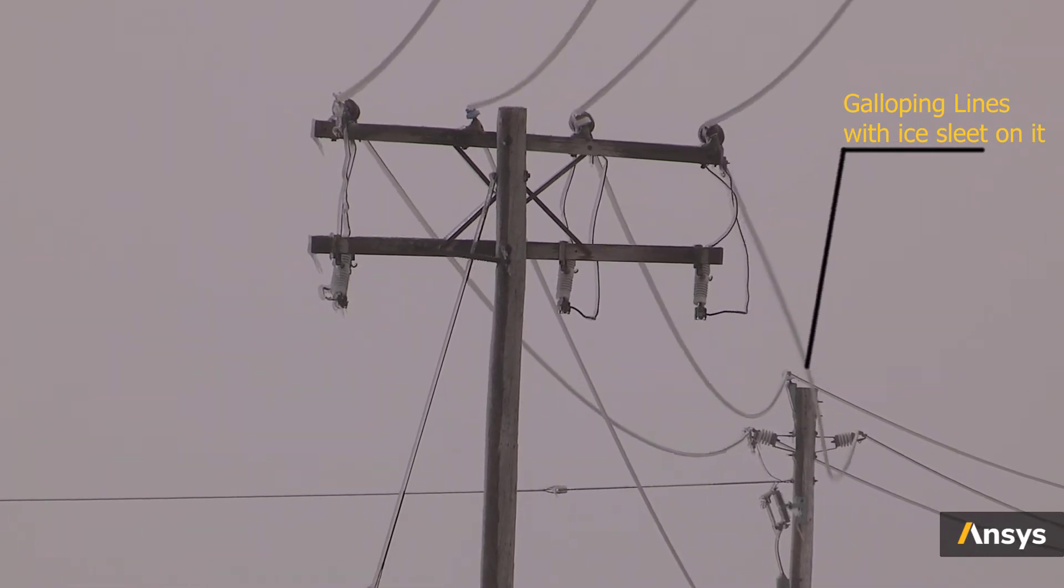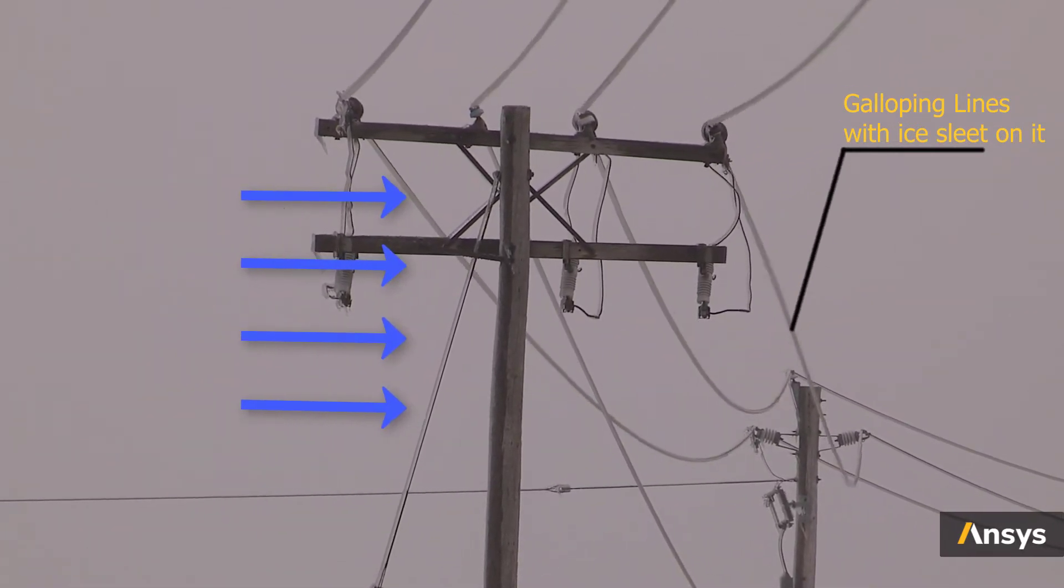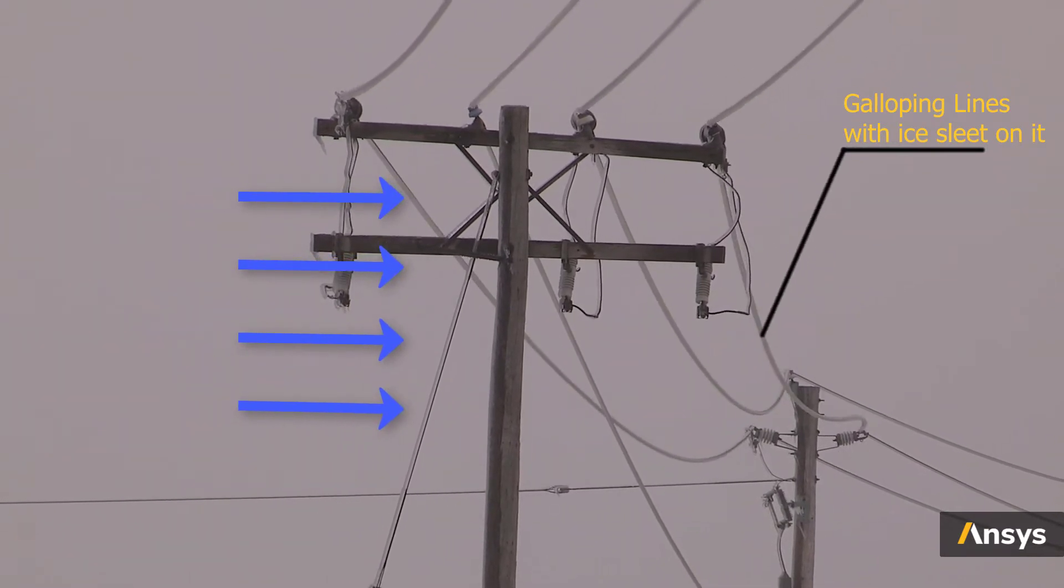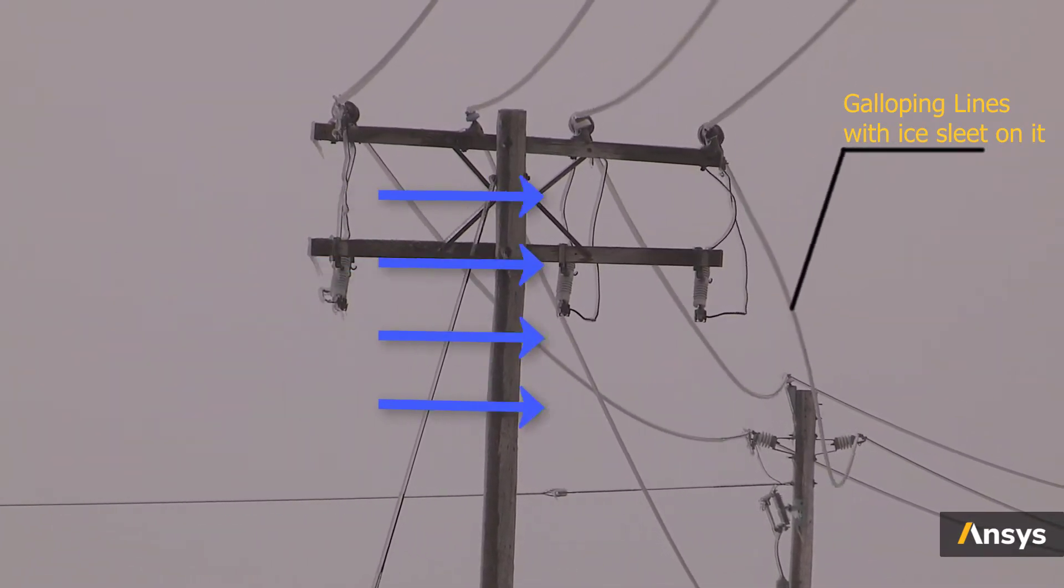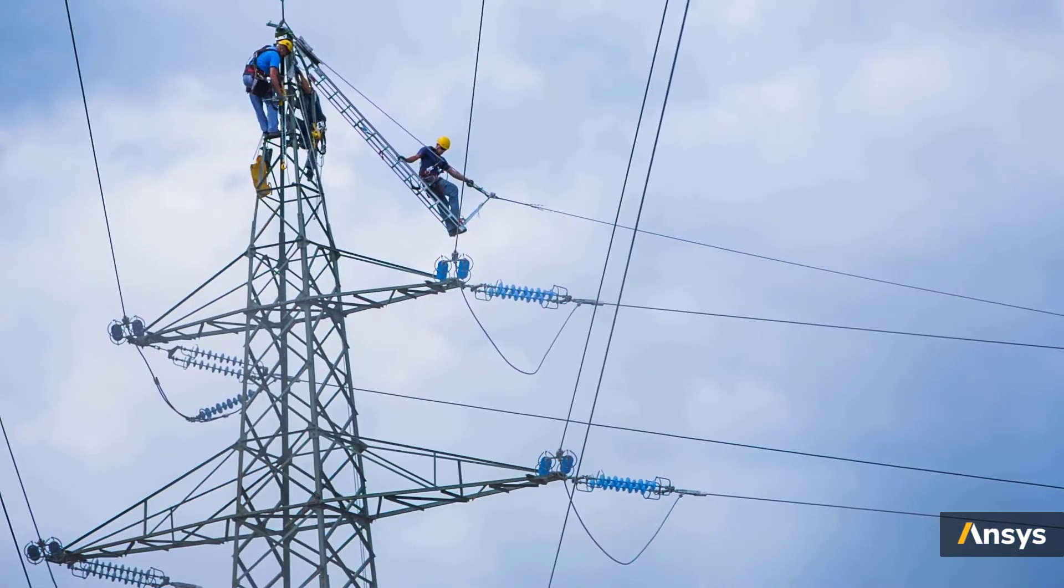When this happens, the cold winds can start applying lift and drag forces on the ice, which can set the transmission lines into periodic motion. As a result, when the loads match the natural frequency of the transmission lines, the wire may be set into vibrations with increasing amplitudes. This is a very dangerous situation.